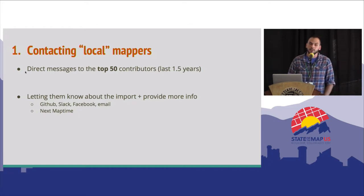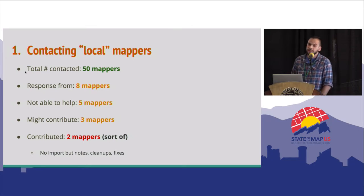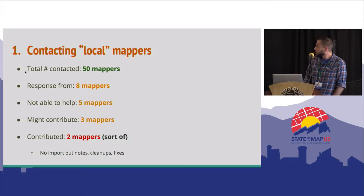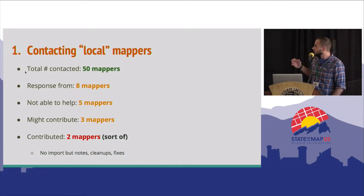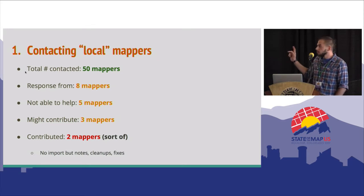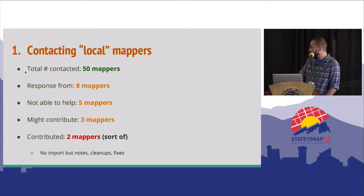I also asked them to join our next MapTime meetup. So how did it go? I contacted 50 mappers and got a response from eight people, which is actually not that bad. But five of them told me they are not able to help because they are busy or don't live in Miami. Three said they might contribute and liked the idea, and two of them actually contributed — not by adding buildings, but by reviewing the data and providing OpenStreetMap notes on issues. That was a great help, but the magnitude was only two out of 50. Also, as a fun fact — I thought this list would contain local mappers, but it turns out that out of the 50, 13 people are working for the Mapbox data team. So for next iterations, I might need a better definition of local mappers.